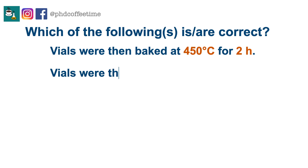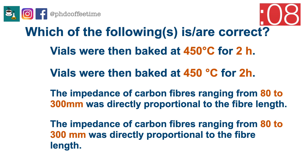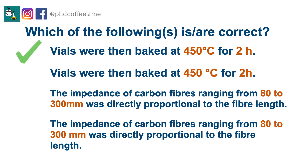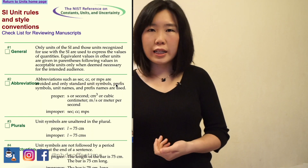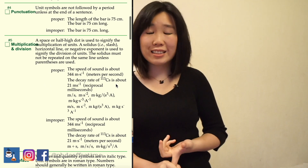Vials were then baked at 450 degrees Celsius for two hours. Do you think we need a space between the number and degrees Celsius or between the number and hours? In the case of SI units, you need to put a space between the number and the unit. Degrees Celsius does not need a space between the number and the unit. We always work with scientific SI units — centimeters, meters — and there are style guides you can look up to find out more about how to write these units consistently.